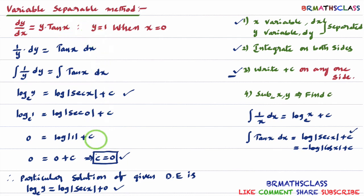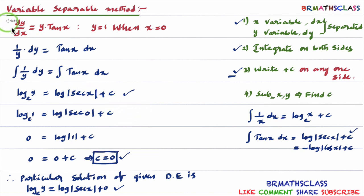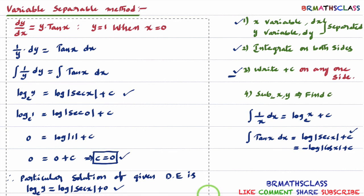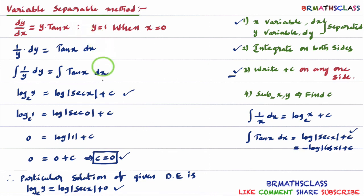To avoid confusion in solving differential equations, please avoid textbook answers, because from person to person the answer may seem different, but actually all forms give the same meaning. Remember one point: in the particular solution, we don't get plus c at the end. Plus c appears in the general solution only. Now we will try to understand the particular solution with one more example.